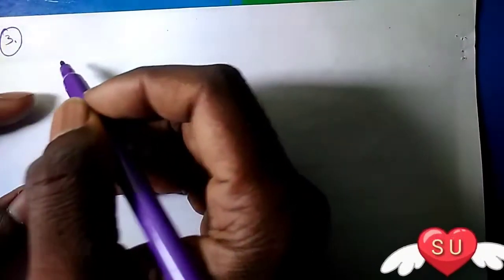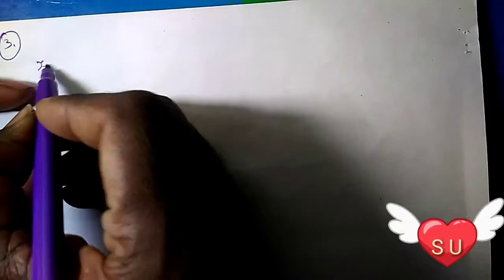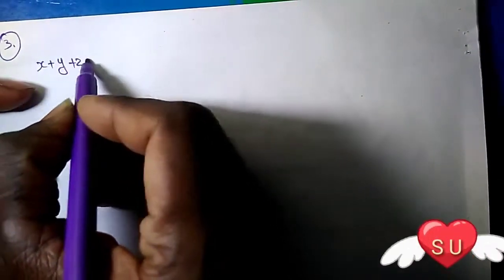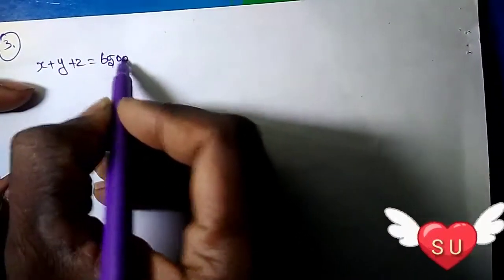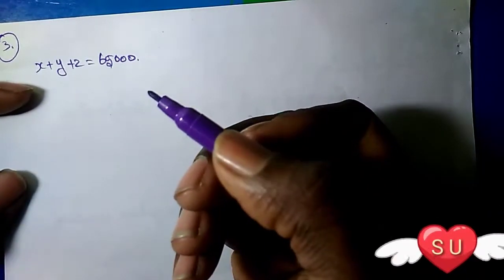In this video, let's understand this sum. The amount of 65,000 is invested in 3 bonds at the rate of 6%, 8%, and 9%. X plus Y plus Z equals 65,000.